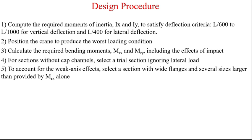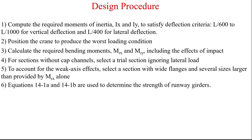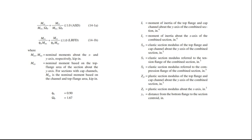Equations 14-1a and 14-1b are used to determine the strength of runway girders. The use of either equation is recommended when AIST TR-13 is not specified and the choice of which to use depends on whether the LRFD or the ASD design methodology is followed. The definitions of different terms that appear in the equations and the appendix tables are summarized on the right.